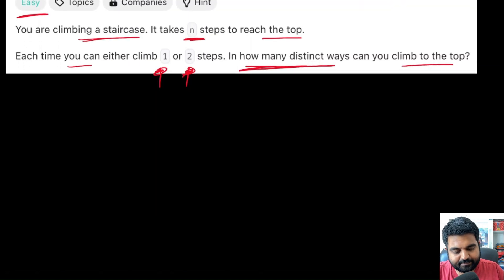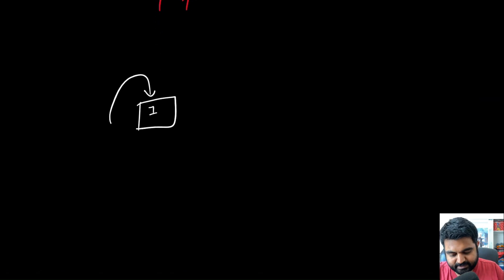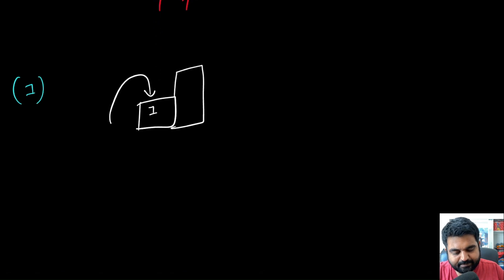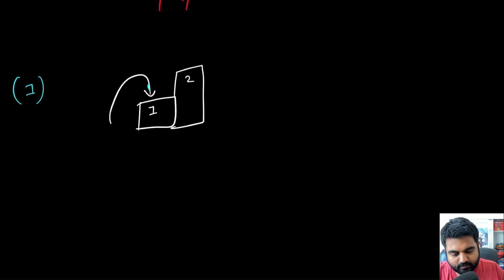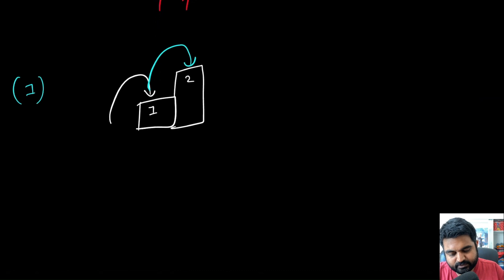Let's understand this with examples. If we have just one step, there is only one way to reach the top — by taking one step, so we return 1. If we have two steps, the distinct ways are: take one step then one more, or take two steps directly. So we return 2 as the answer.